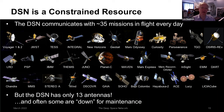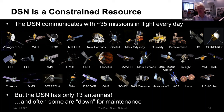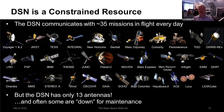The DSN is a constrained resource, communicating with about 35 missions in flight every day. These include U.S., ESA, and Japanese spacecraft — an international endeavor. But the DSN only has 13 antennas, so not all spacecraft can be tracked simultaneously. The schedule dictates which time of day each is contacted, and often one or more antennas are down for periodic maintenance.